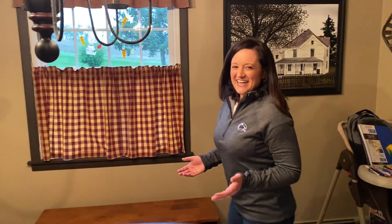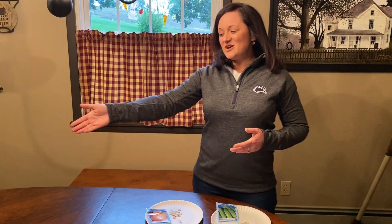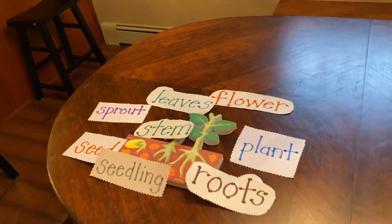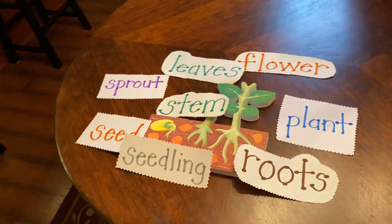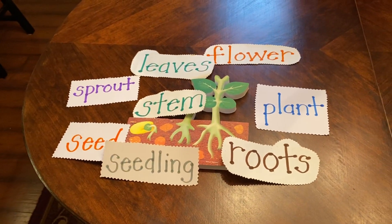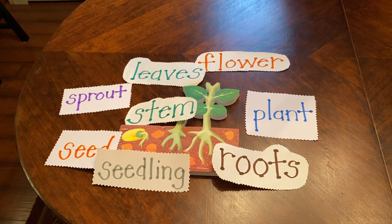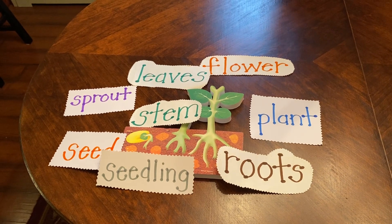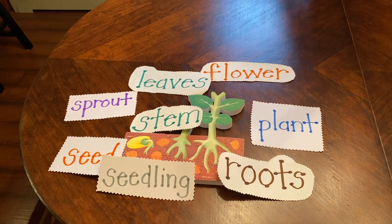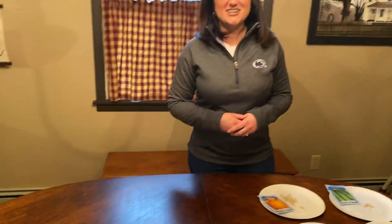We made it through our plant lesson! So what I need you to do — you're going to label a plant just like we did here together, and you're also going to order the stages of the life cycle from first to last. I know you can do it. Job well done, everybody. See you later.